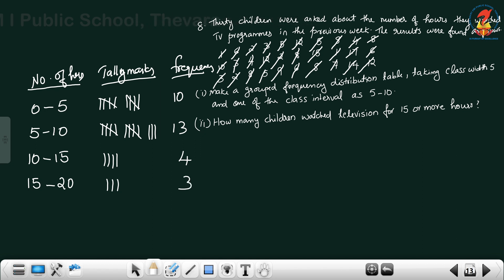Total, how many children are there? 30 children. Total frequency you add it, you will get 30 children. 3, 4, 7, 10, 30.